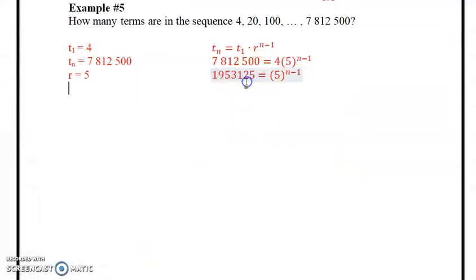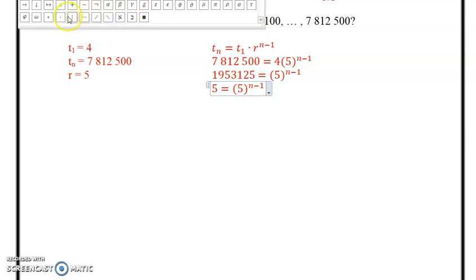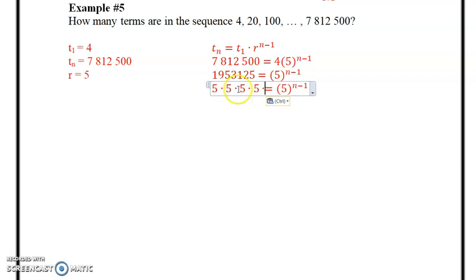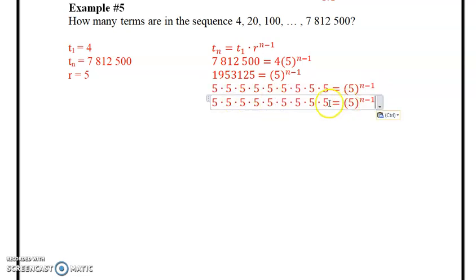So we can change this number here. It's equal to 5 multiplied by itself 9 times. So I can substitute this in. This becomes 5 times 5, times 5, nine times. So 1,953,125 equals 5 multiplied by itself 9 times. So this expression can be written as 5 to the power of 9 because there's 9 fives.